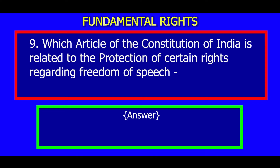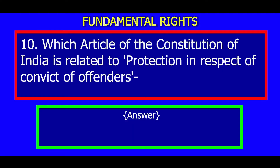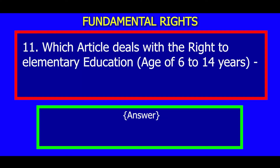Answer: Article 19. Number 10: Which article of the Constitution of India is related to protection in respect of conviction of offenders? Answer: Article 20. Number 11: Which article deals with the right to elementary education for children aged 6 to 14 years?